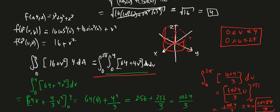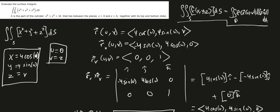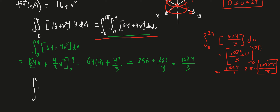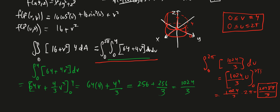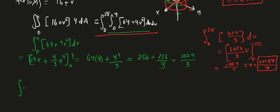We also need to include the top and bottom disk surfaces. We'll call the top S1 and the bottom S2. This means we need to evaluate the double integral over S1 of f(x,y,z) dS plus the double integral over S2 of f(x,y,z) dS.